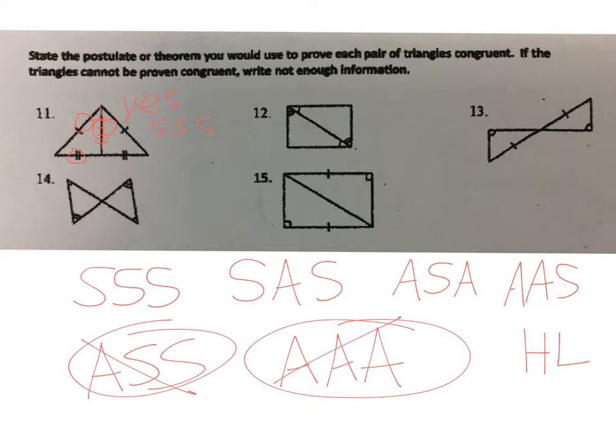Alright, number 12, we need to mark what we know to be true. So we know that they share that line, so therefore they have that in common and it's congruent. And so looking at this one, I have an angle, a side, and an angle. So that's yes by ASA—angle, side, angle.